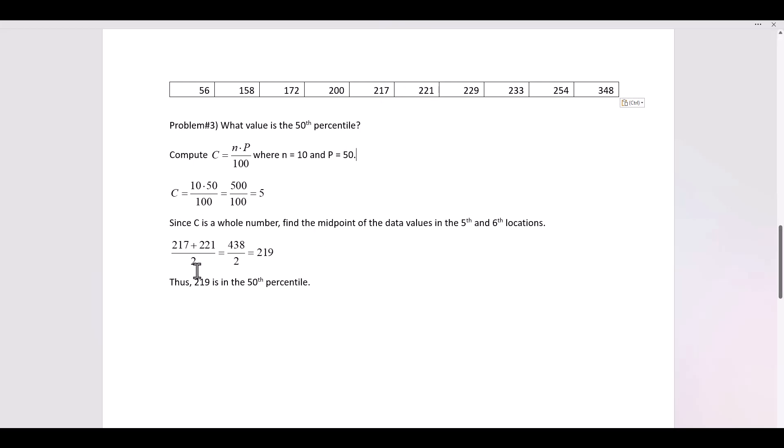So we have, and finding the midpoint, we have to add 217 plus 221 and divide by 2. So 438 divided by 2 is 219. Thus 219 is in the 50th percentile. So keep in mind, there's two different processes when using C.